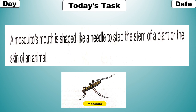A mosquito's mouth is shaped like a needle to pierce the stem of a plant or the skin of an animal. Mosquitoes ke mouth ki shape needle jaisi hoti hai jis se wo plants aur animals par attack karta hai.